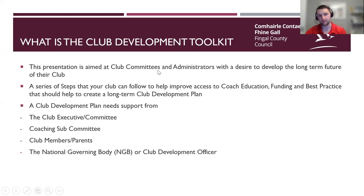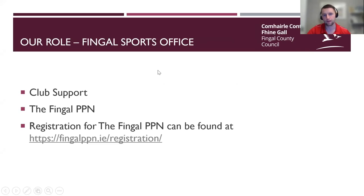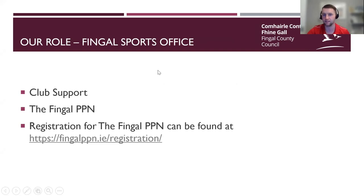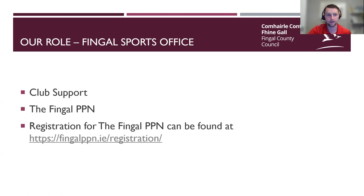The jumping-off point for every club development toolkit is to find out the current position of your club. The role of the county council sports office is to help you with that — providing access to education and training, information on different funding avenues, and administrative support including committee skills, governance, and best practice such as safeguarding courses. We also help you link to your national governing body if you don't have one already.